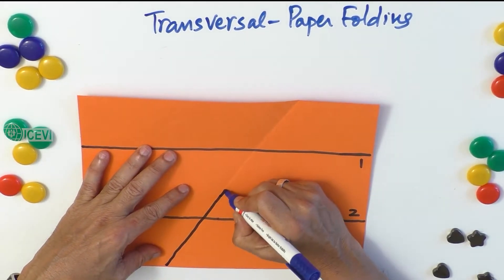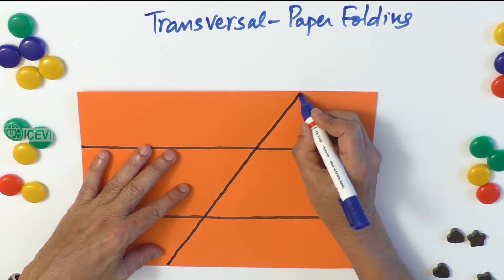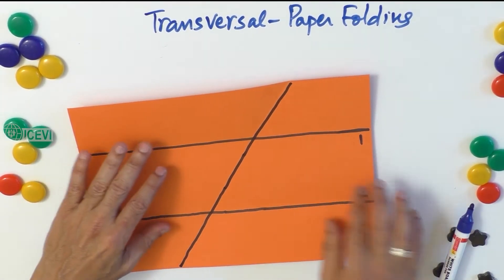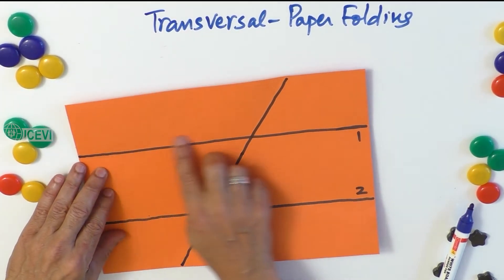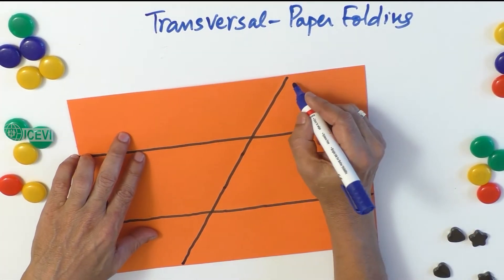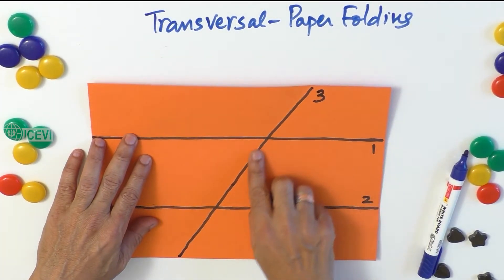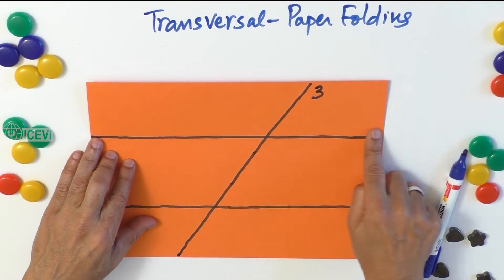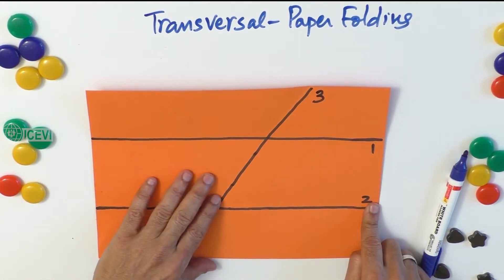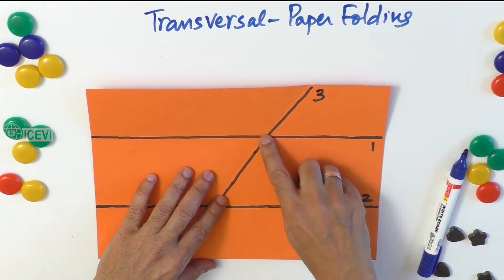All these have tactile markings. So let us call the transversal as line 3. So 3 is the transversal, 1 is line 1, 2 is line 2. Now we had already proved that the opposite angles are equal.